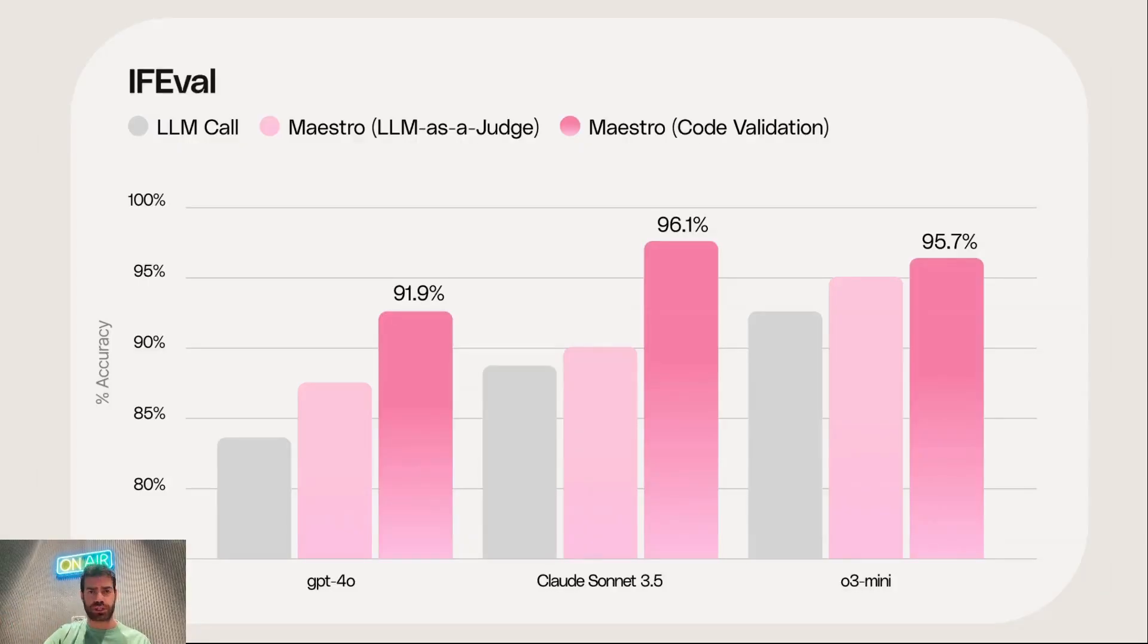And you can see that it actually works. You can actually see that for IFEVAL, for instance, we get really high results for GPT-4.0 or Claude Sonnet 3.5 or O3 mini. We're getting very high results by just improving them and using our planner and smart execution engine.